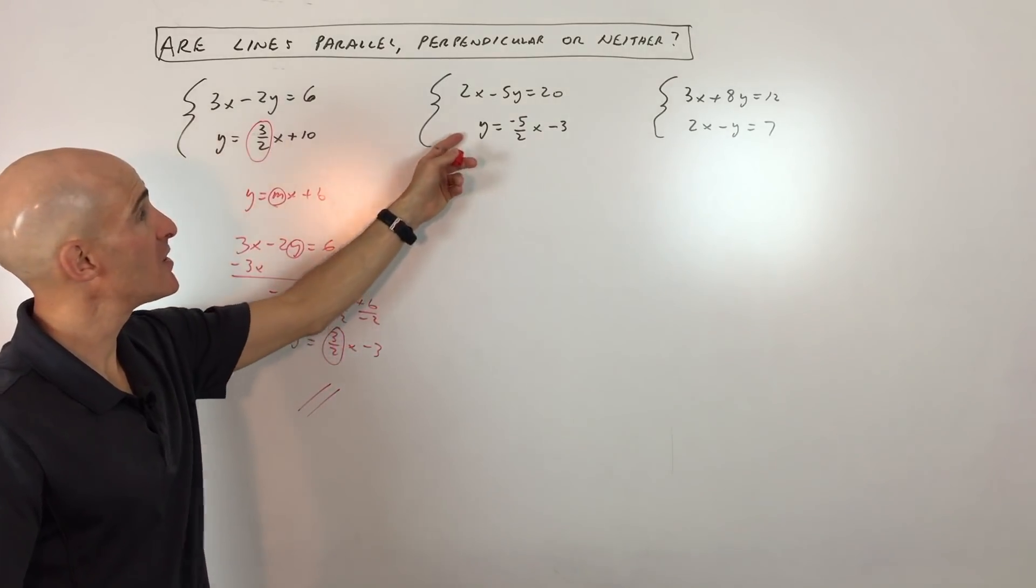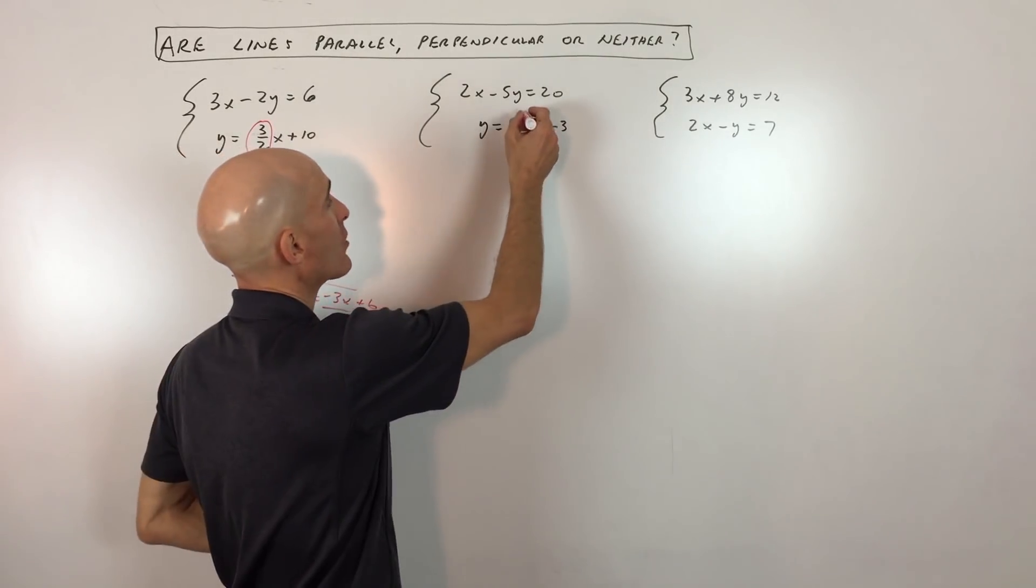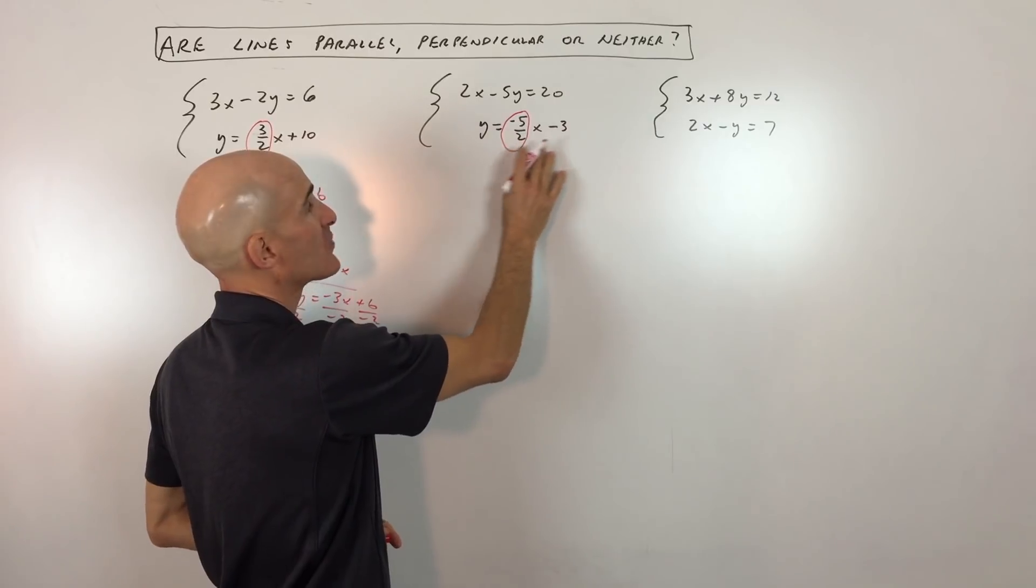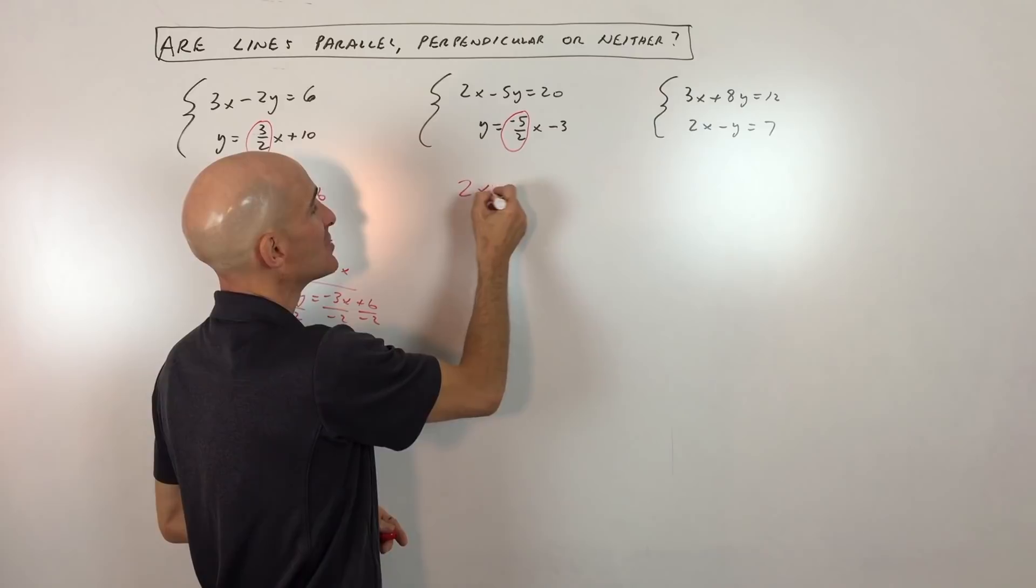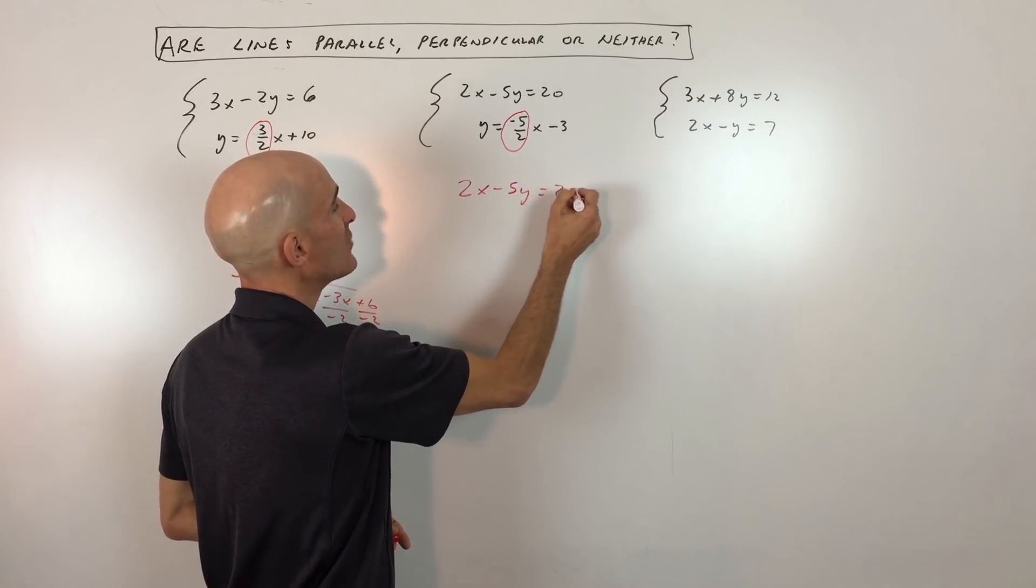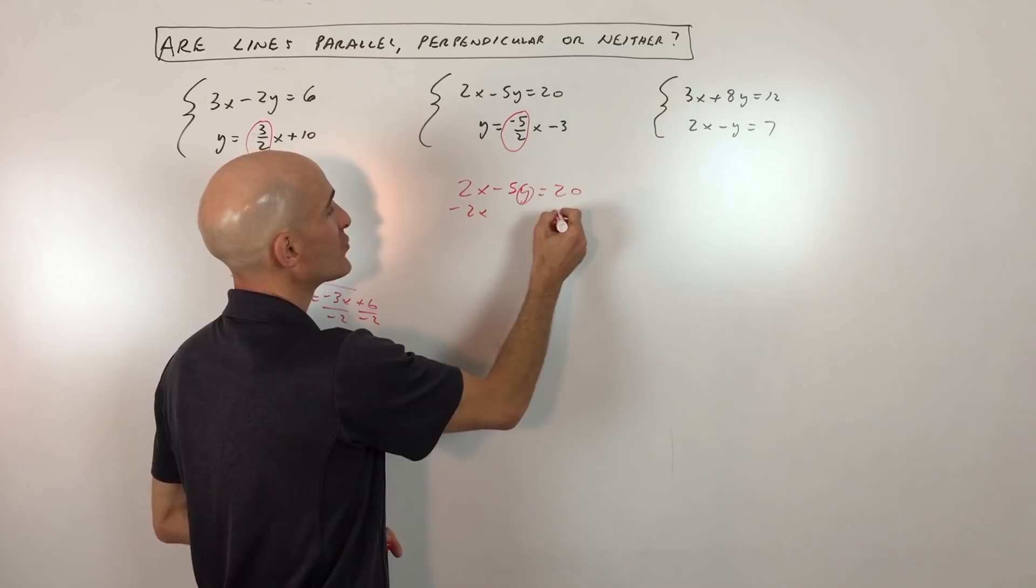Okay, example two here. You can see the second equation is already in the slope-intercept form of the line, the y equals mx plus b, and the slope is negative 5 halves. But we want to rearrange this top equation to solve for y. So let's do that by subtracting 2x from both sides.